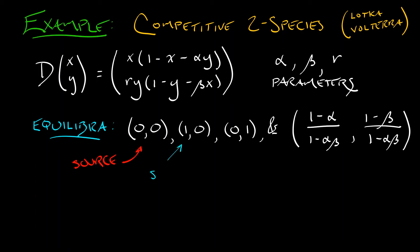The other two were one species wins. (1,0) was a sink if beta was bigger than 1, and a saddle if beta is less than 1. That's interesting. Likewise, (0,1) was a sink or a saddle, depending on whether alpha was bigger than 1 or less than 1, respectively.